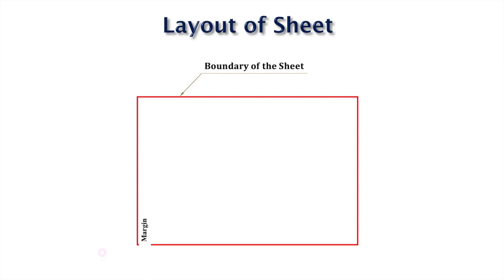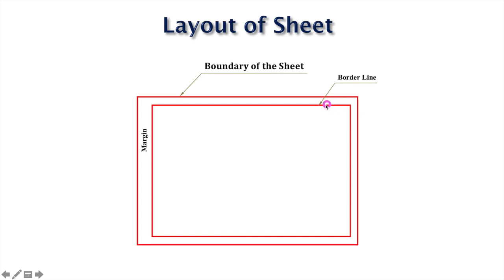Layout of the sheet: consider the boundary of an A1 sheet. You need to draw a margin between this boundary. The dimension of the margin is generally 20 mm on the left side, and 10 mm on the top, bottom, and right sides. So the borderline is 20 mm apart from the boundary on the left side and 10 mm on the remaining three sides.